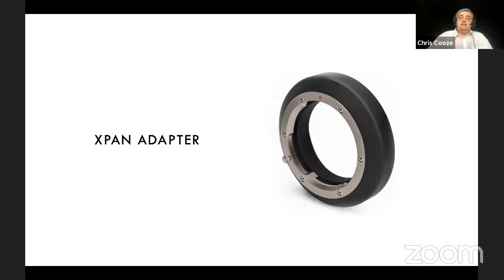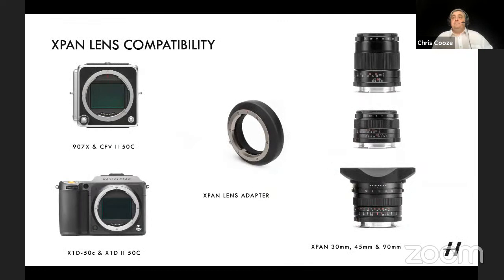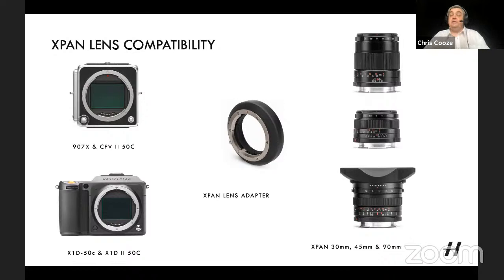Additionally, there is the X-Pan adapter for the three X-Pan lenses — the 30mm, 45mm, and 90mm — from Hasselblad's X-Pan and X-Pan 2 cameras of the early 2000s. These are manual focus, manual aperture, and with the adapter can be used on either camera body, requiring the electronic shutter. The 45mm X-Pan lens is very similar in size to the XCD 45P compact lens.